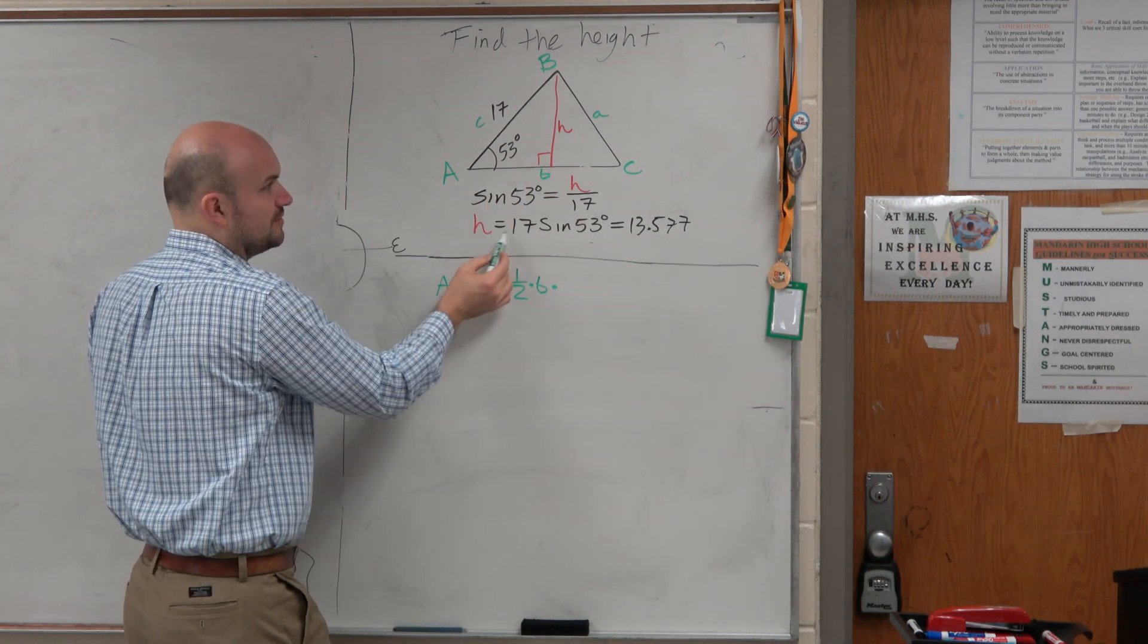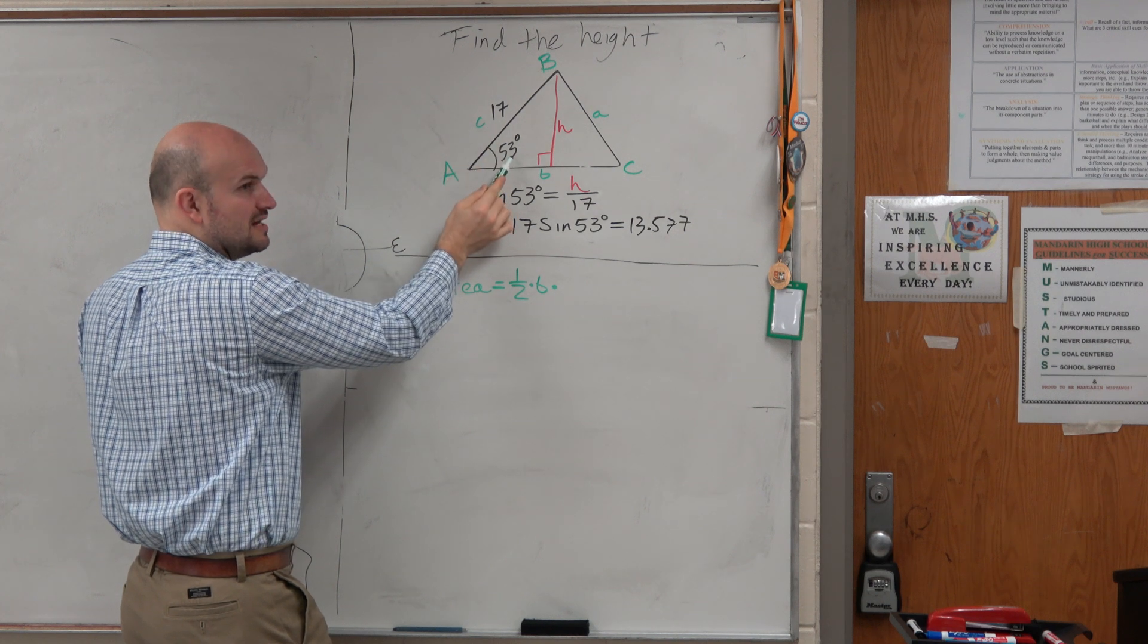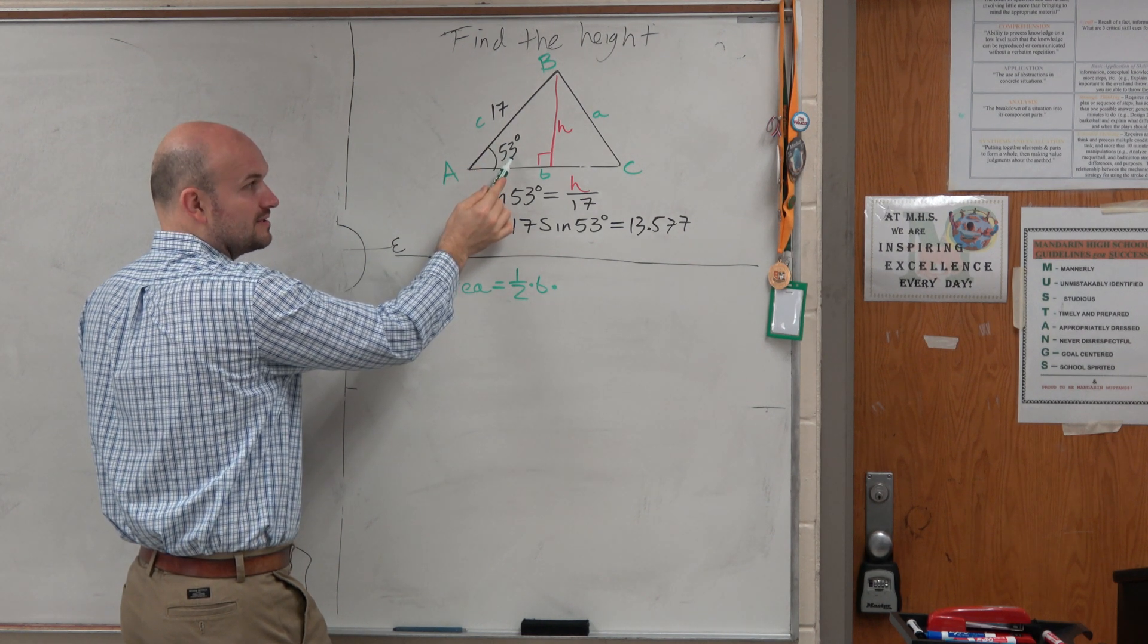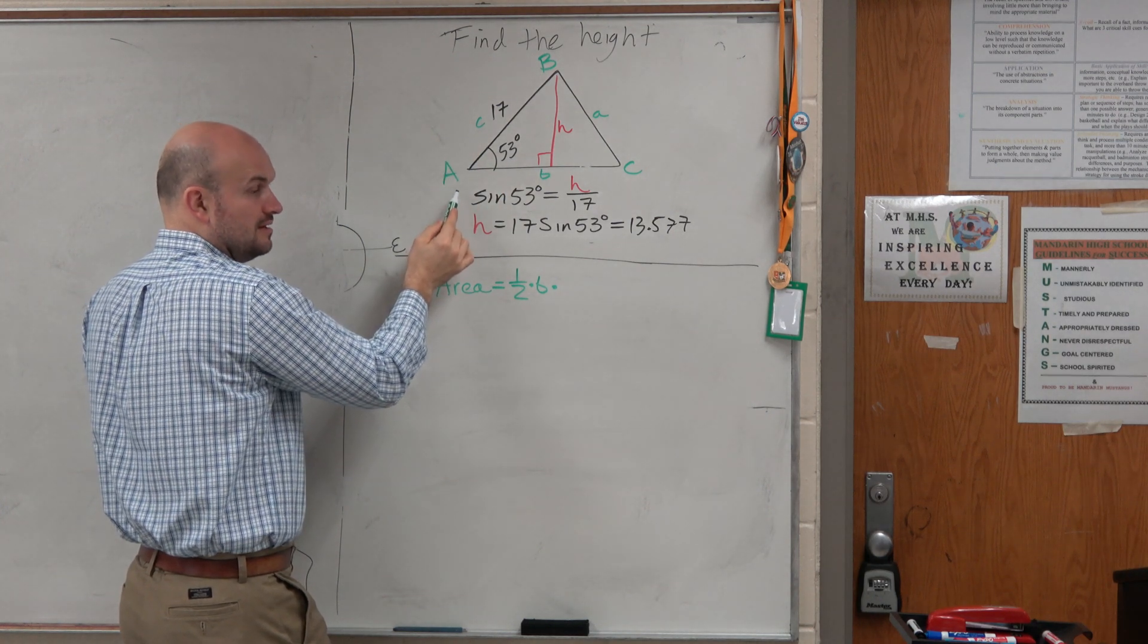The height is really represented by this side times the cosine of that angle, or the sine of that angle, right? So it would really be c times the sine of a.